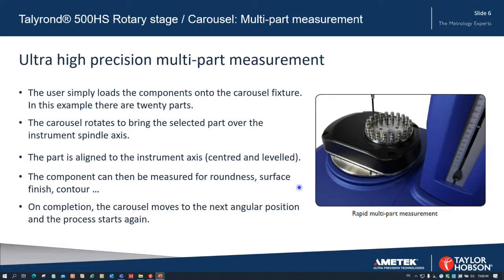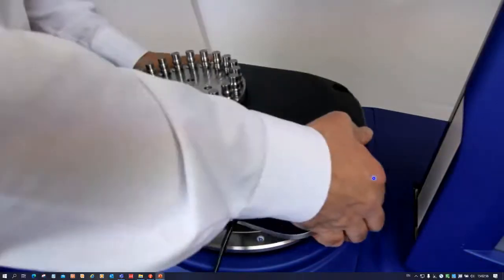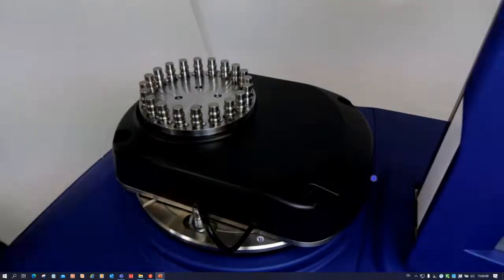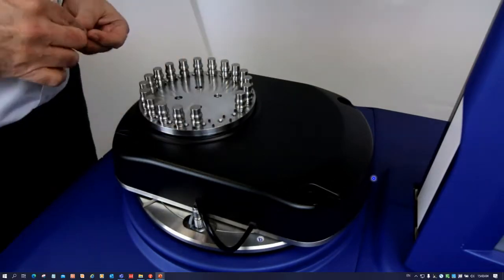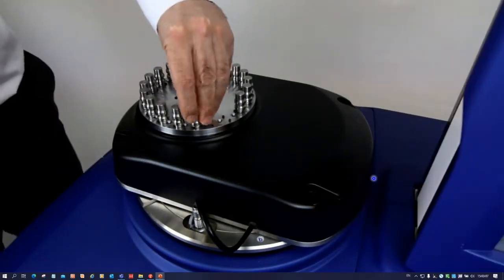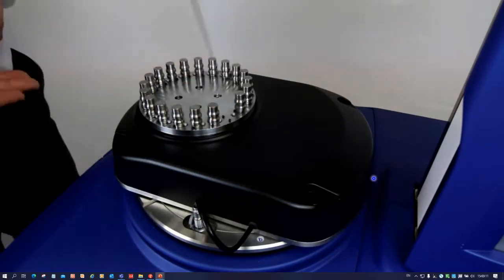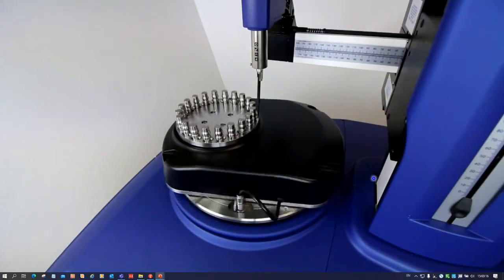On completion, the carousel moves to the next angular position and the process starts again. So let's have a look now at a short video clip of this. The carousel is loaded very easily and it's plugged in, and the samples can easily be removed or inserted in place. They don't have to be the same samples, they could be different ones, provided the program copes for that.